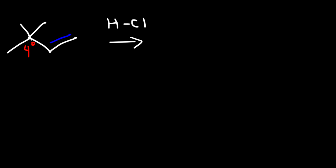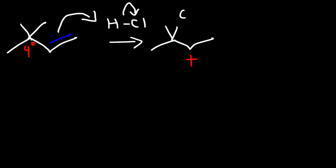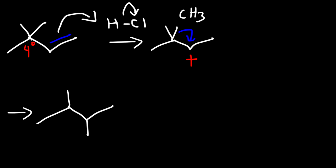Now let's look at our next example. What's going to happen if the double bond is next to a quaternary carbon? We react it with HCl. The mechanism is very similar to the first one: the double bond reacts with the hydrogen, the pi bond breaks, giving us a secondary carbocation intermediate. Now, what we're going to have is a methyl shift — the methyl group will move towards the carbocation. The entire carbon structure changes, but we now have a tertiary carbocation, which is more stable than the secondary one. So the chloride ion will attack that tertiary carbocation, giving us the final product.